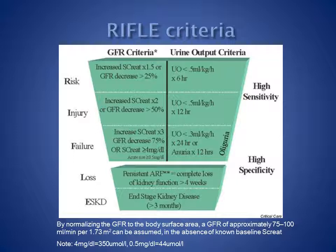RIFLE class I, or injury to the kidney, indicates a GFR decrease of 50%. It is reflected by a rise in serum creatinine to double the baseline value, or urine output less than 0.5 mL per kg per hour for 12 hours.